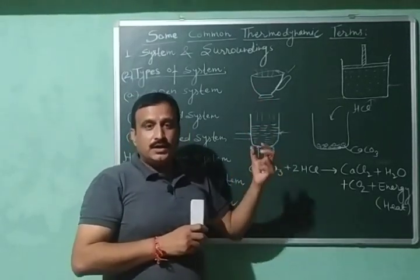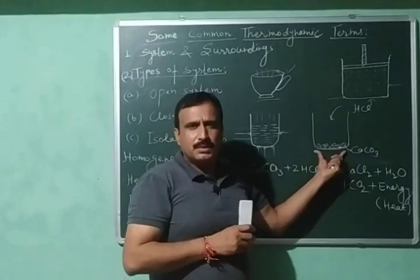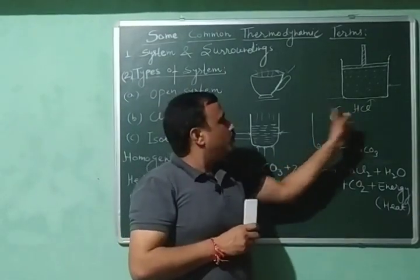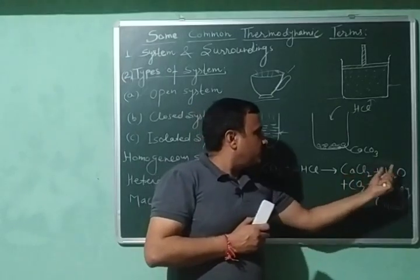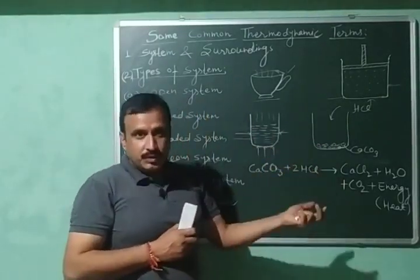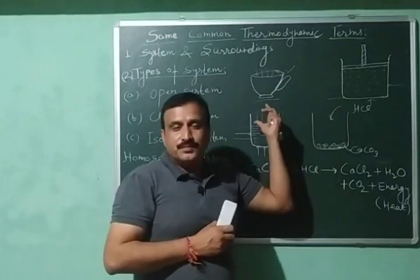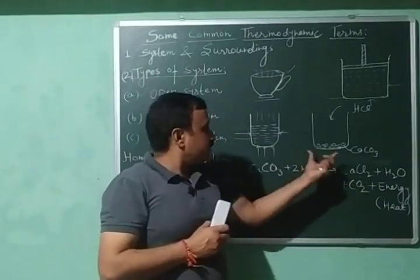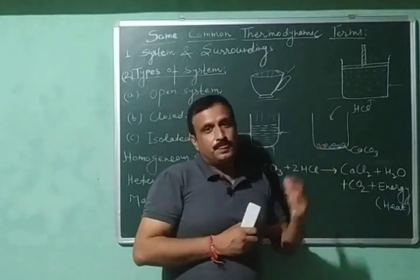These were physical systems. Now let us consider a chemical reaction. I have taken some marble pieces — calcium carbonate — and added hydrochloric acid in an open vessel. The reaction is: CaCO₃ + HCl → CaCl₂ + H₂O + CO₂ + energy in the form of heat. The heat generated during this reaction goes out, and simultaneously carbon dioxide also escapes from the system. Heat is energy, and carbon dioxide is matter. So this chemical reaction exchanges both energy and matter with the surroundings, making it another example of an open system.